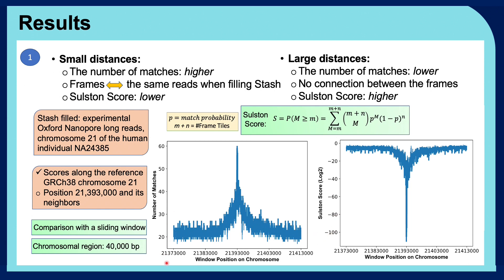On the left, we can see that as the sliding window gets closer to the window of interest, the number of matches increase, which is because more common reads cover the closer neighboring areas. And on the right, the Sølsten score values in logarithm scale increase as we get further away from the window of interest, which is as we expected.